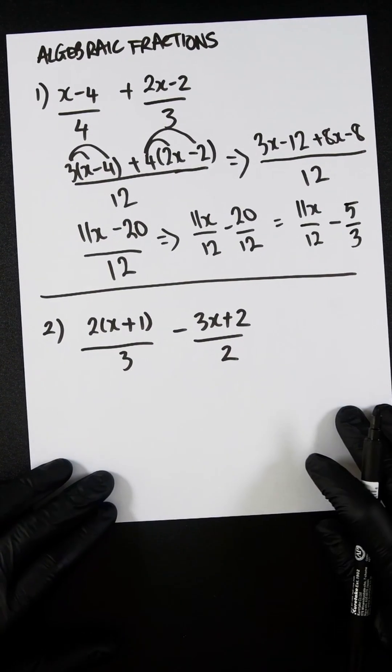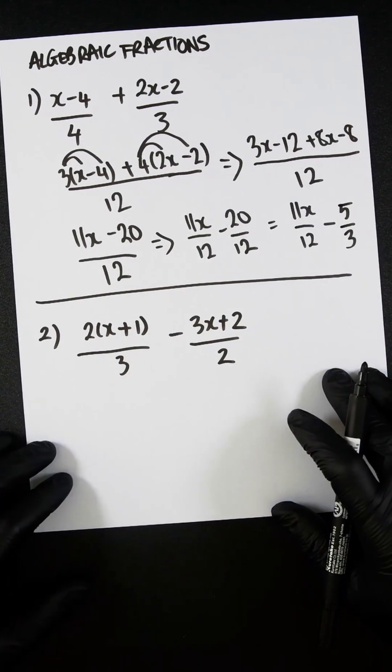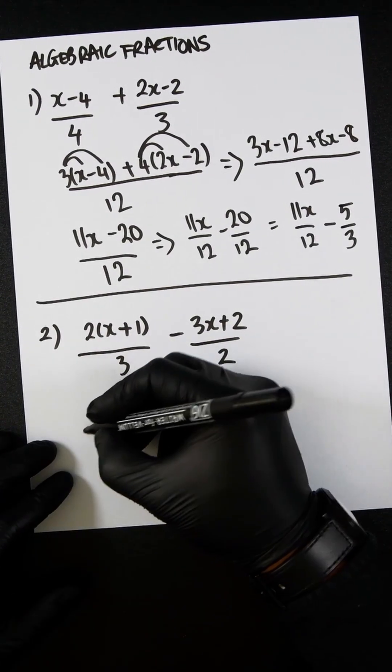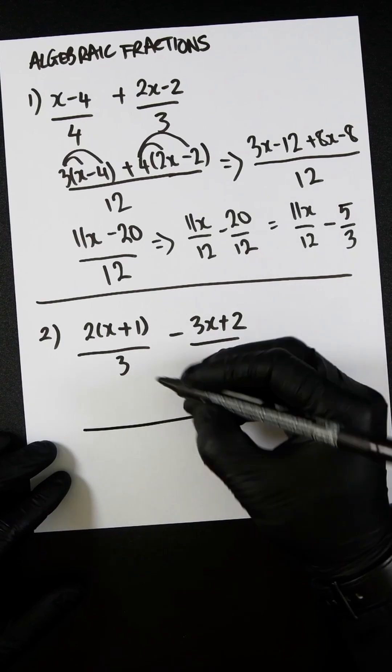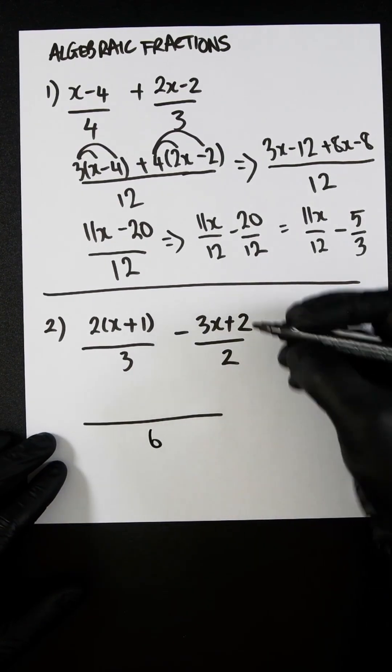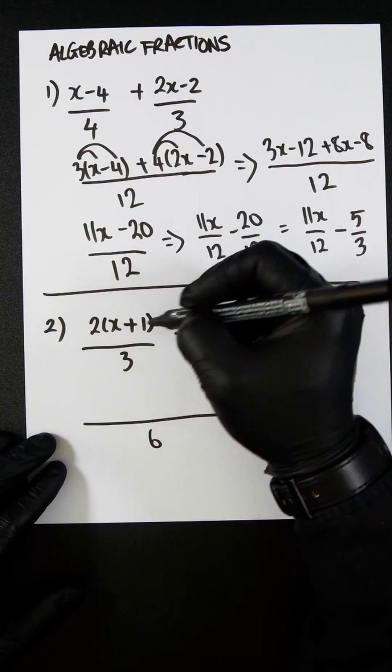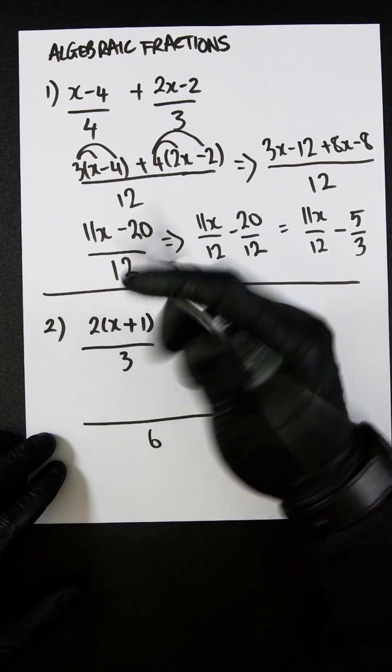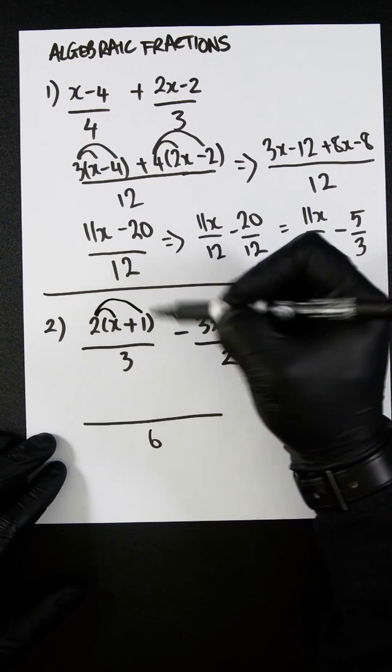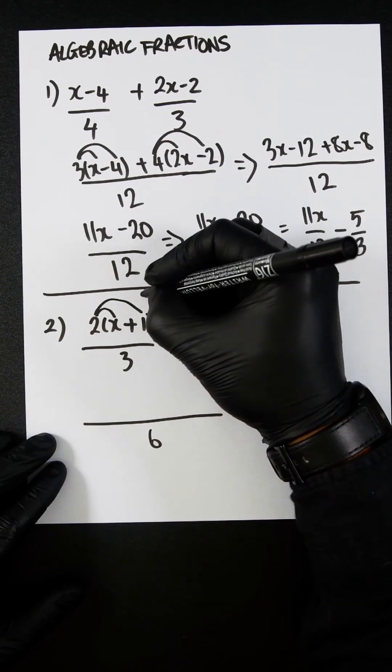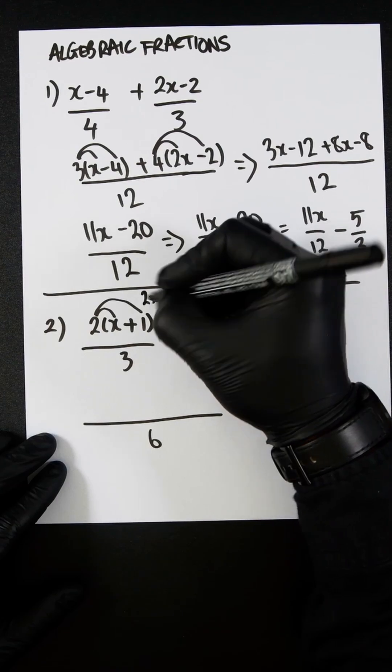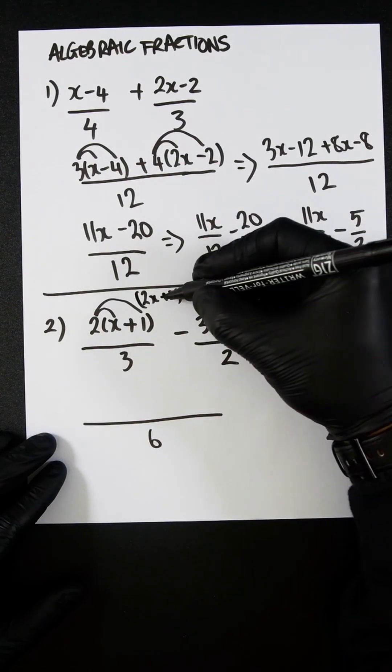Subtraction. Exactly the same thing as what we've done above, except we're going to subtract them. So let's find the common denominator, 3 times 2, which is 6. And then we will now multiply 2 by (2x plus 1). However, it might be easier if we already expand that in. So that is going to be 2x plus 2.